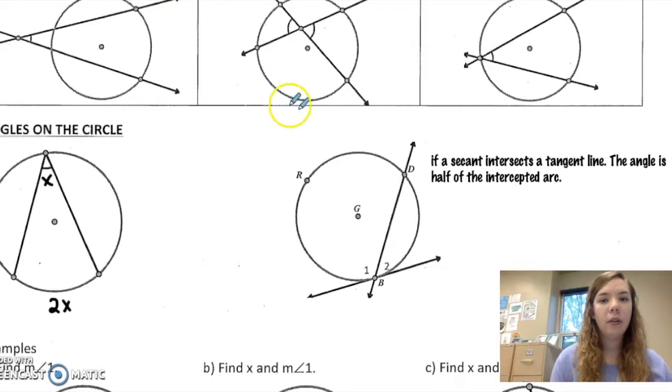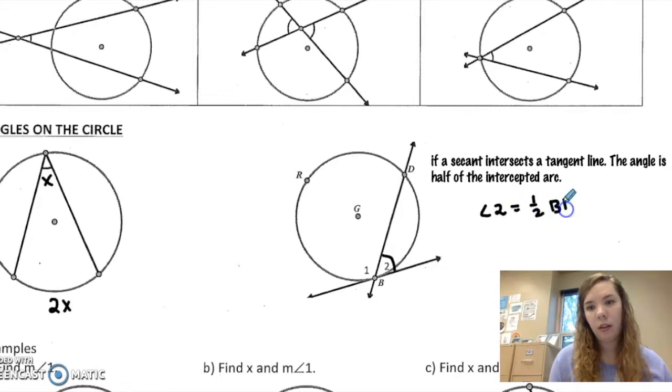Here, angle 2 is half the arc measure BD. And angle 1 is half the arc measure BRD. That's a major arc, so it needs three letters.